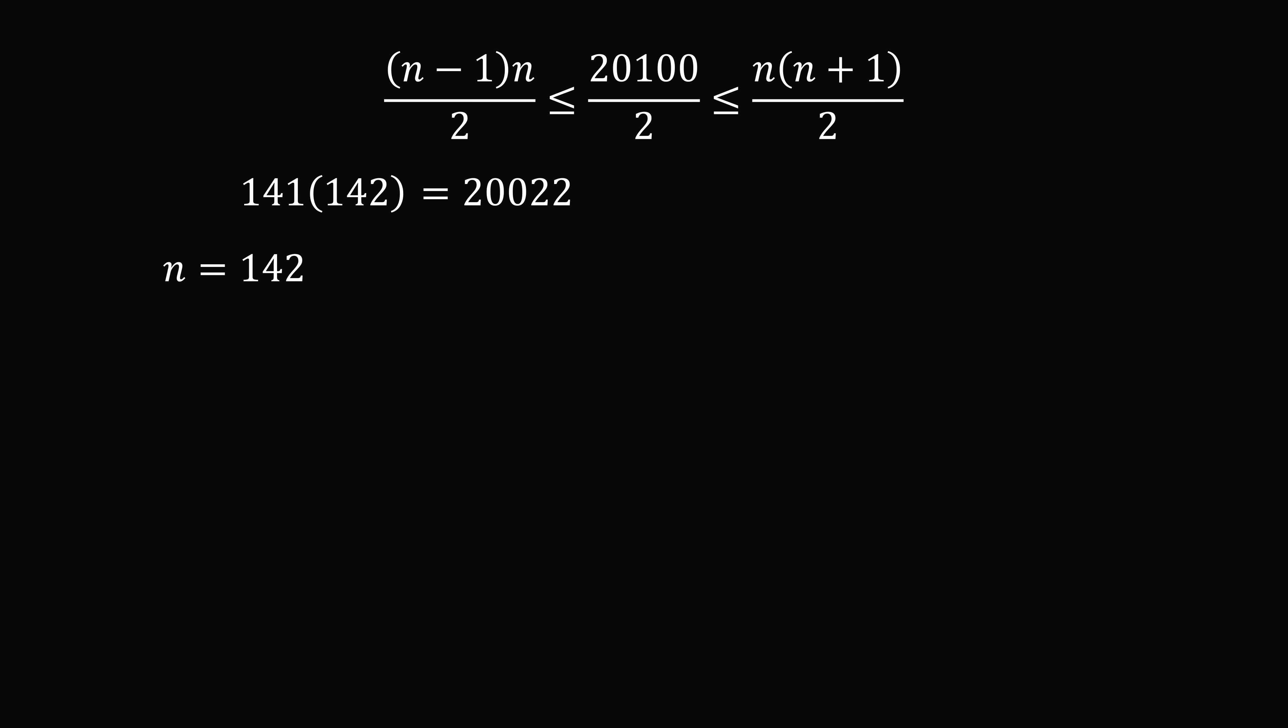So for 142, we can write 142 × 143. We write this as 142 × (141 + 2). 141 × 142, we've already calculated, so we just need to add 2 × 142. So we have 20,022 + 284, which equals 20,306. And that is greater than the numerator of 20,100. So this is what we want.